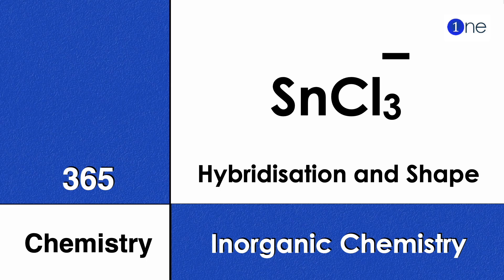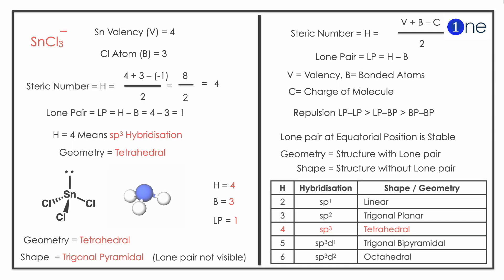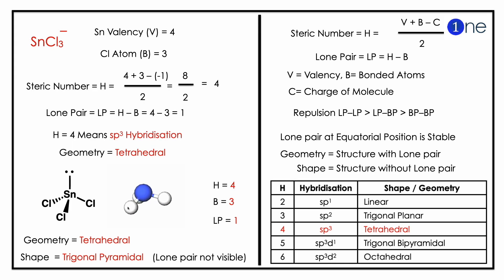Welcome to One Chemistry. This is the 365 Chemistry series on Inorganic Chemistry questions. Here they give one tin trichloride anion, SnCl3-. You should find the hybridization and shape of it. To find the hybridization, you should know the steric number.